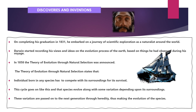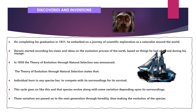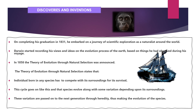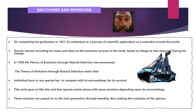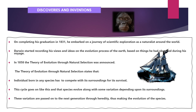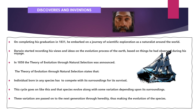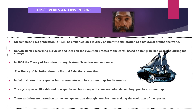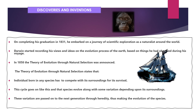The theory of evolution through natural selection states that every individual born in any species has to compete with its surroundings for its survival. This cycle goes on and on, and that species evolved along with some variations depending on its surroundings. These variations are passed on to the next generation through heredity, thus making the evolution of species.